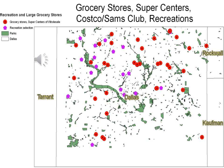This map was created in GIS and revealed access to recreation such as parks, athletic stadiums, and fitness centers. It also included grocery stores and super centers like Costco and Sam's Club locations. The grocery stores and super centers were depicted with a red circle with a black dot, recreation was in purple, and parks are in green. There is limited access to parks in the southern region of Dallas, as well as recreation and major grocery stores or super centers. This is important because lack of access to healthy food and recreational opportunities can increase the risk of obesity.